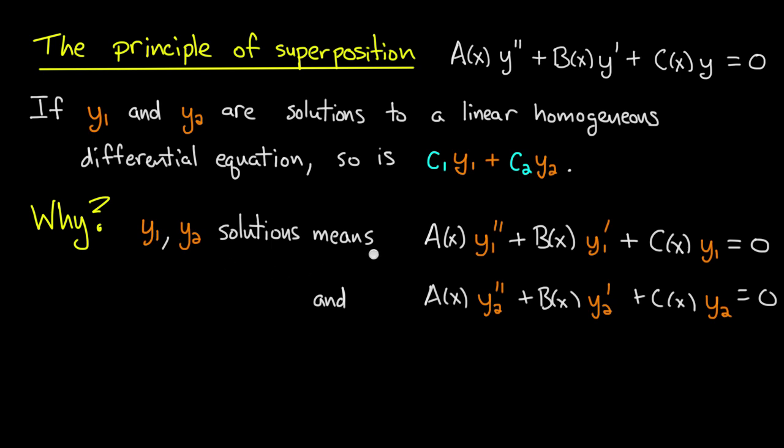Now that means, by definition, that if I plug in y1 or y2 into the equation, then the equation is satisfied. Now what can I do with this information? Well, I want to show in the end that a linear combination of y1 and y2, c1 y1 plus c2 y2, is a solution to the differential equation. So it would be smart for me to try taking a linear combination of these two equations.